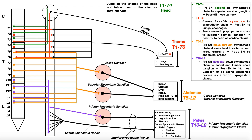In general, the sacral splanchnic nerves — which are postganglionic — and the postganglionic neurons coming off of the inferior mesenteric ganglion run closely together in the lower abdomen and pelvic regions. They run together as a plexus called the inferior hypogastric plexus, and from there they go to particular organs to control sympathetic function.